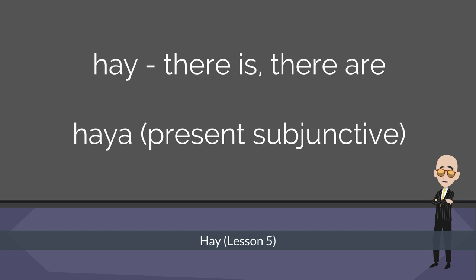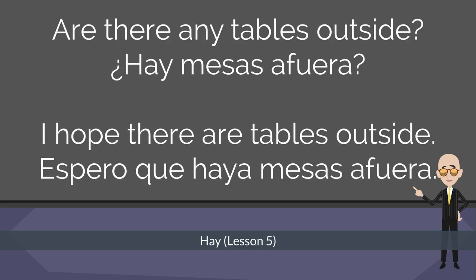Do you remember way back in lesson five when you learned the word hay, which means 'there is' or 'there are'? You used one word for everything — whether asking 'Are there any strawberries?' or 'Are there any chairs?' Well, the subjunctive of hay is haya. Now that you know the present subjunctive of hay, it should be super easy to make sentences. Are there any tables outside? — that's not the subjunctive. I hope there are tables outside — Espero que haya mesas afuera.